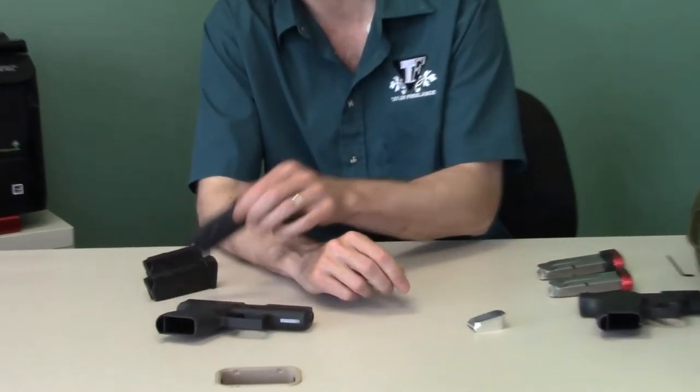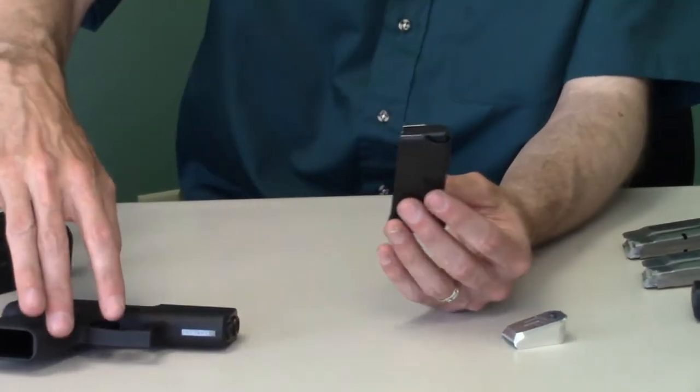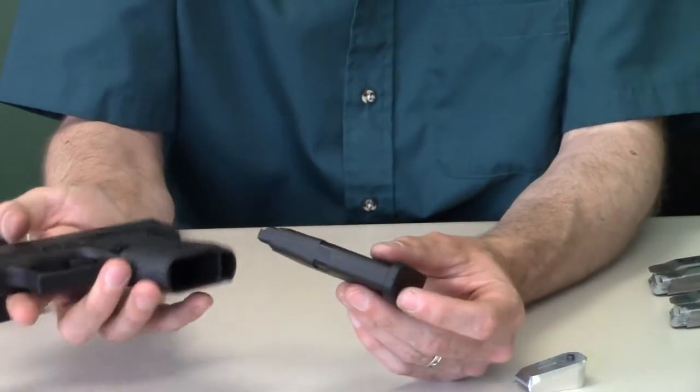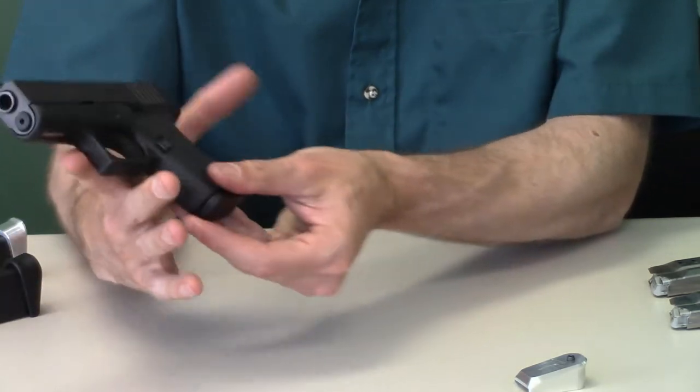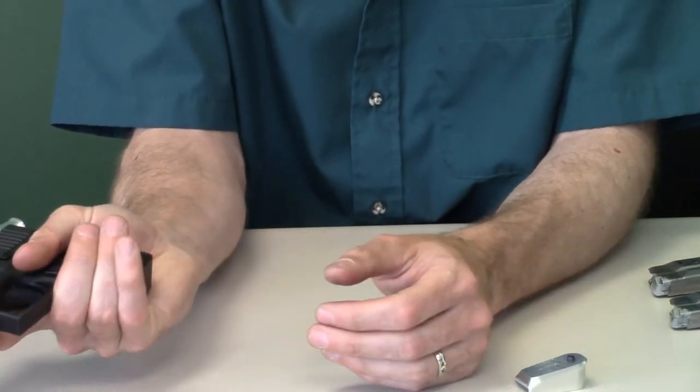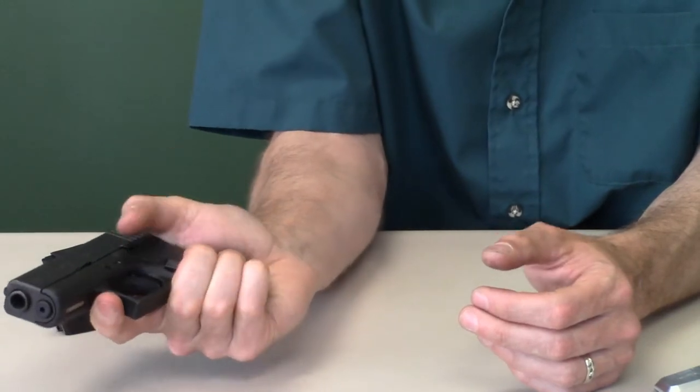The primary complaint that people have about the 43, particularly using the factory base pad, and I'll move down to my stuff here so you can see it better, is that by the time you take a 43 and use the little short easy to conceal base pad, it's a little too easy because at this point my fingers start coming off the bottom and the gun becomes really unshootable by normal people.